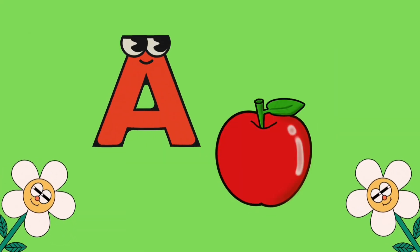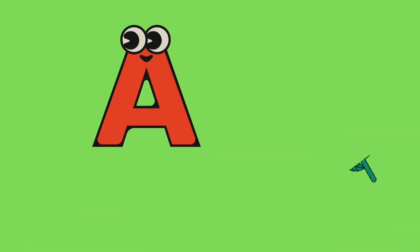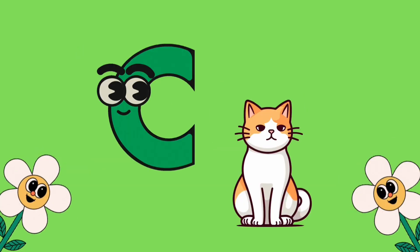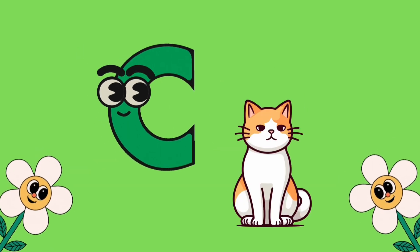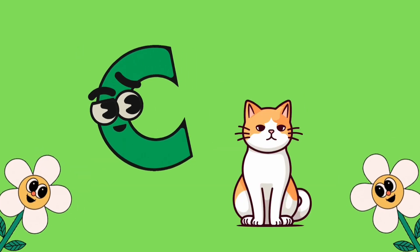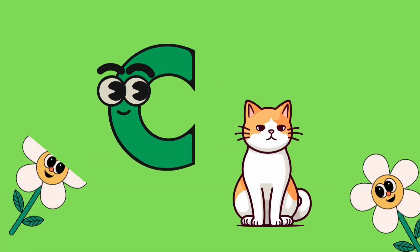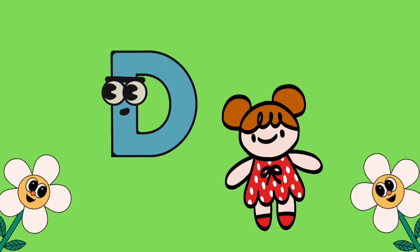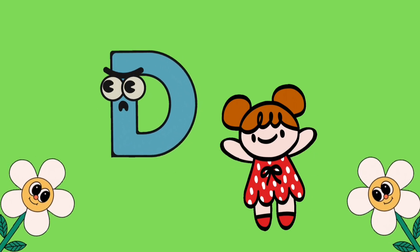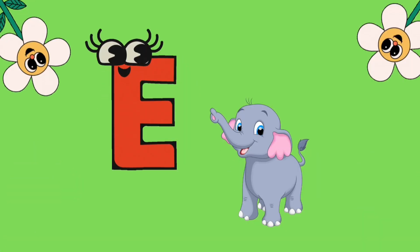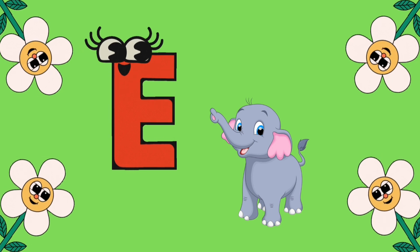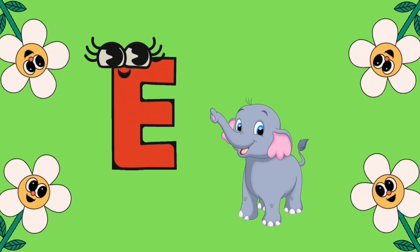A is for apple, B is for ball, C is for cat, D is for doll, E is for elephant.